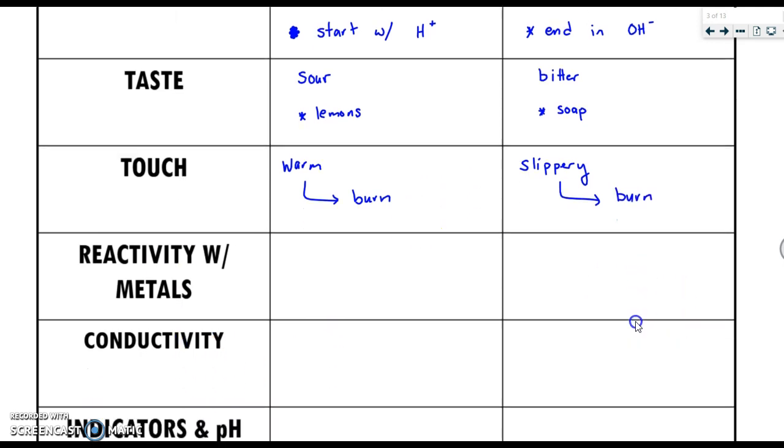Things that are acidic have a very high reactivity to metals. We saw this in our reactions lab earlier in the semester, where bases are low to none, which is really good because we use bases very often as cleaning supplies.